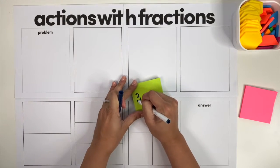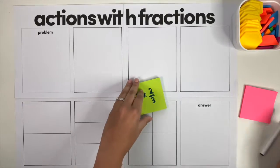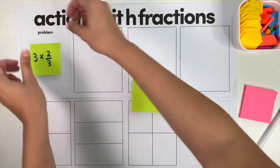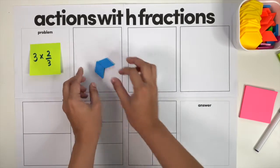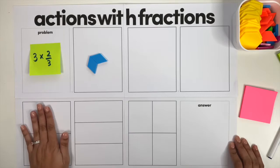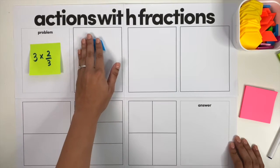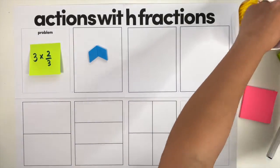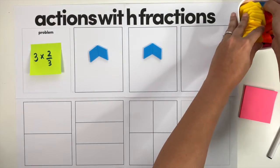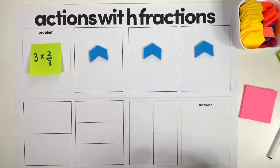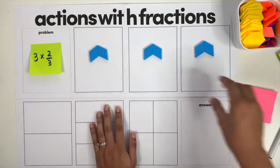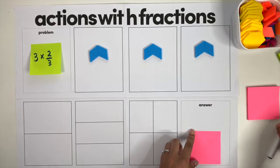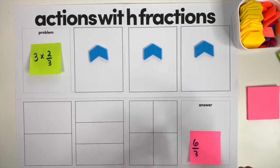Let's take a look at what this looks like to model it with pattern blocks on our math mat. We are going to model three times two thirds, which in this situation is three groups of two thirds — multiple groups or equal groups. On our math mat we've got three whole groups, halves, thirds, and fourths. So here we've got one group of two thirds, another group of two thirds, and then another group of two thirds. To figure out the total value of three groups of two thirds, we need to combine them. We can say the answer is six thirds.